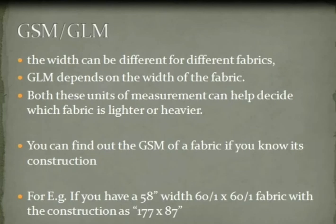The width can be different for different fabrics, and GLM depends on the width of the fabric. These units of measurement can help decide which fabric is lighter or heavier. You can find out the GSM of a fabric if you know the construction of warp and weft — ends per inch and picks per inch — and also the width of the fabric. For example, if you have a fabric with a width of 58 inches.